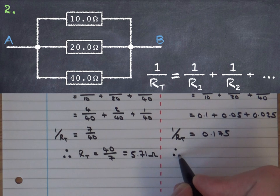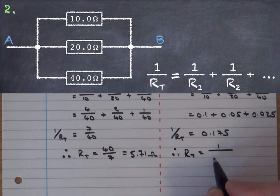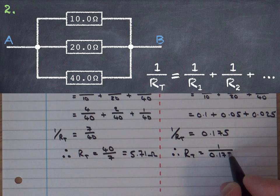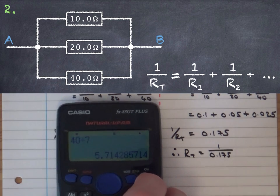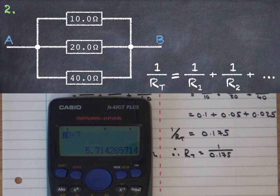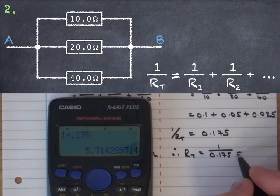Whereas this method 1 over RT is this value here and if I want to find RT I actually take 1 over this answer so therefore RT is 1 over this value 0.175 and I will calculate it but it should give me as long as I've not pressed the wrong button - whoops - I've just done 1 divided by 0.175 gives me the same value 5.71 ohms. And there we have it.